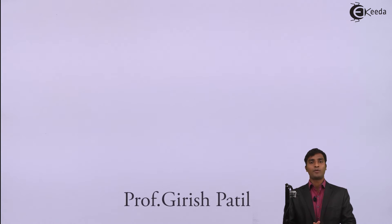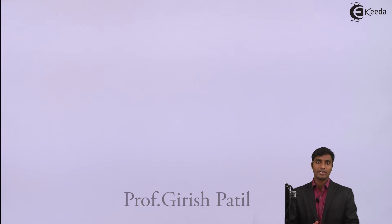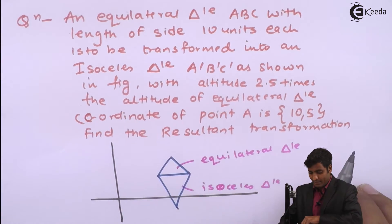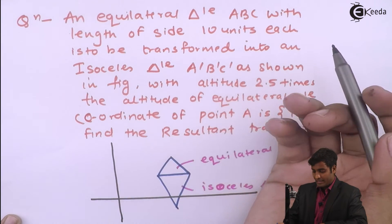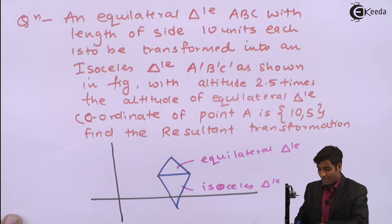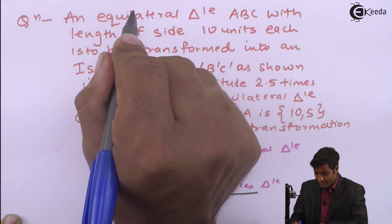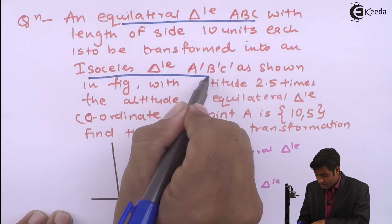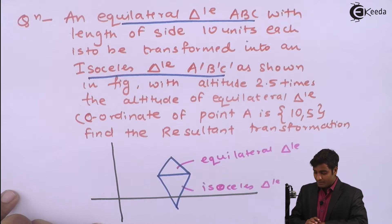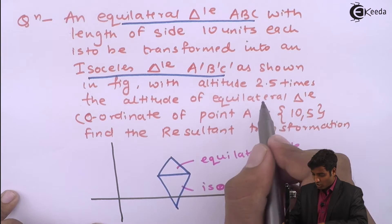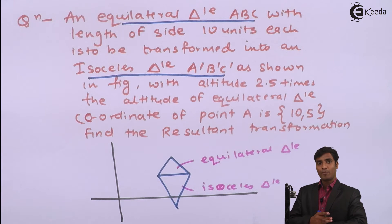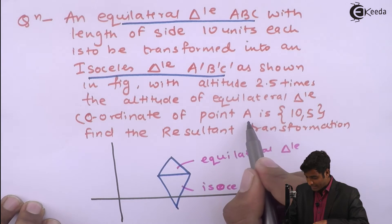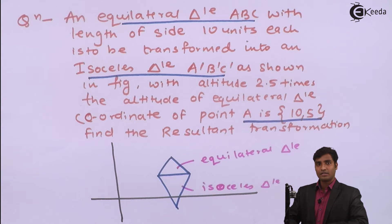Hello friends, today we will solve a problem related to reflection, also called a mirror. The problem is: an equilateral triangle ABC with side length 10 units each is to be transformed into an isosceles triangle A-dash B-dash C-dash, with altitude 2.5 times that of the equilateral triangle. The coordinate of A is given as (10, 5) and we have to find the resultant transformation.